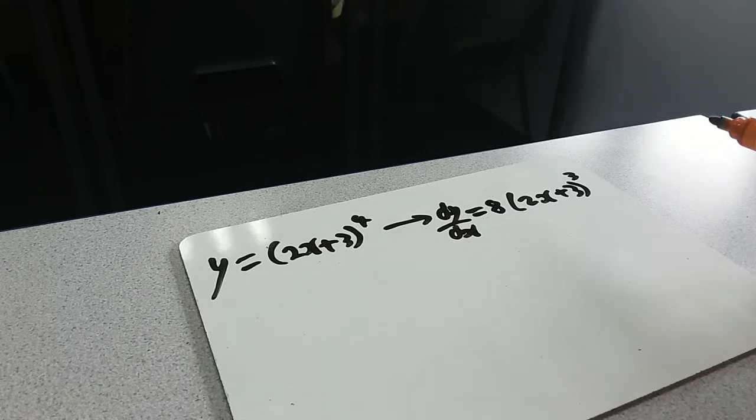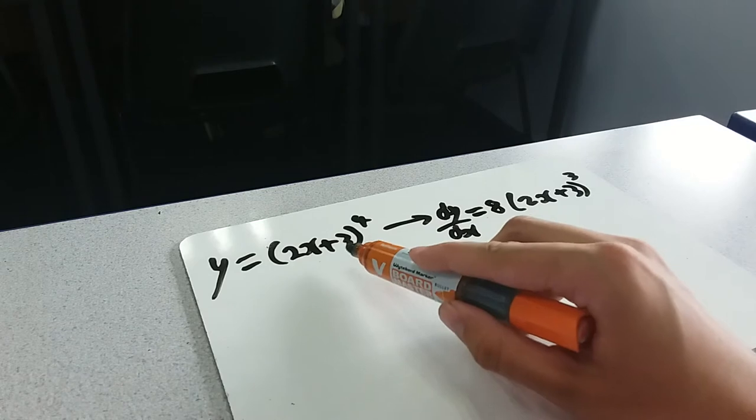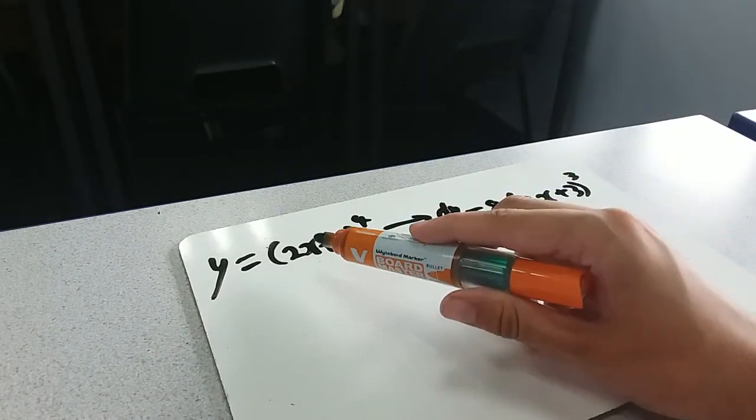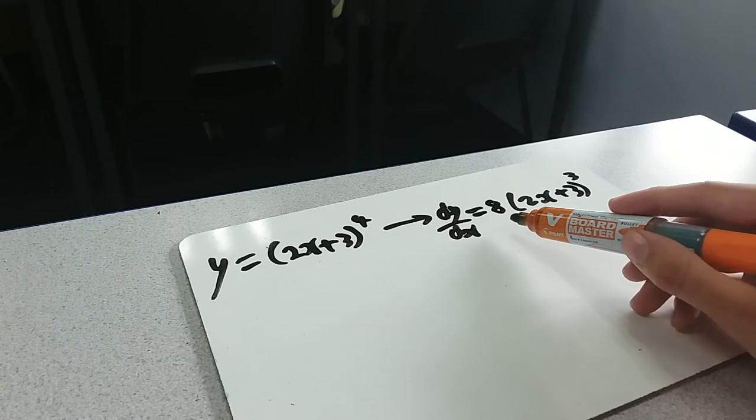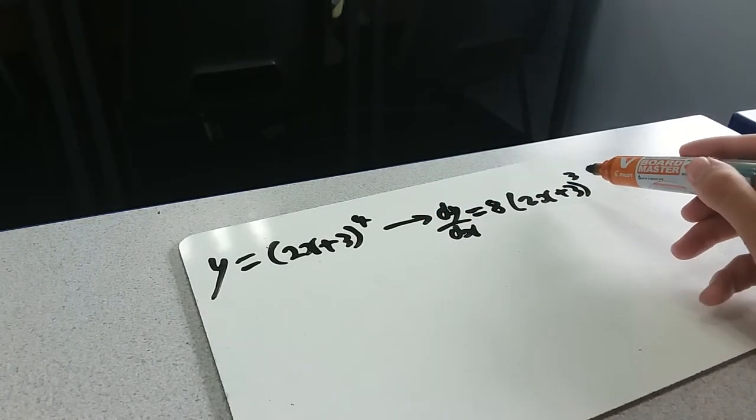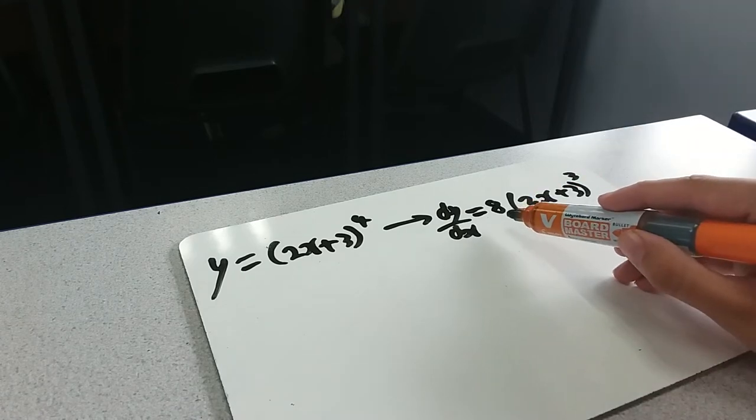If you look at what has happened here, the 2x plus 3, the main bit of the bracket, is still there. We've timed down by the power, so the power of 4 came down as a coefficient. We took one away from the power, so it's a power of 3 there, but we've also got an extra factor of 2 around.